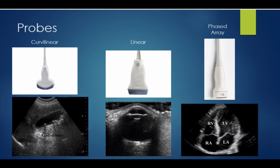The phased array probe is narrower than the linear probe, and it has great temporal resolution, which means it can be used to look at things that are moving. It is often used to look at the heart when doing an echocardiogram. Here the probe is placed at the apex of the heart, right over the point of maximal impulse, and you generate a great view of all four chambers of the heart. In general, you can use any probe to look at any structure. If you think about what you are trying to image and how deep the structure lies within the body, then you can create the best image by picking the appropriate probe.